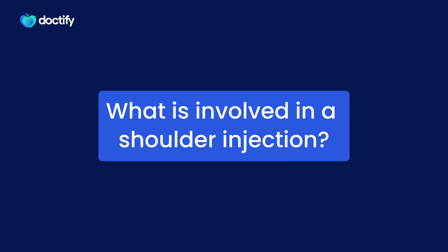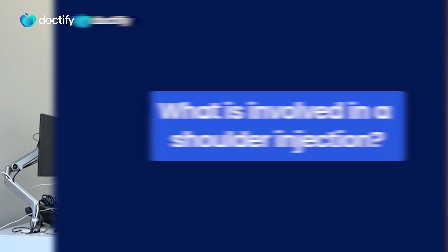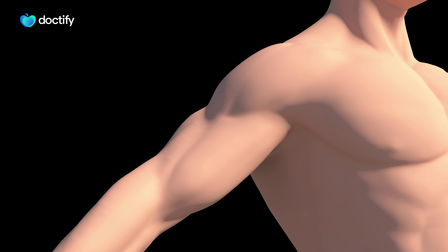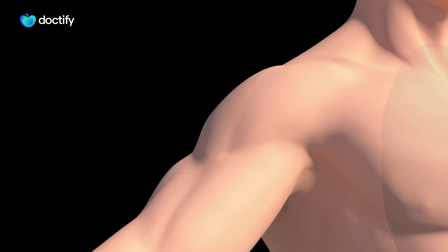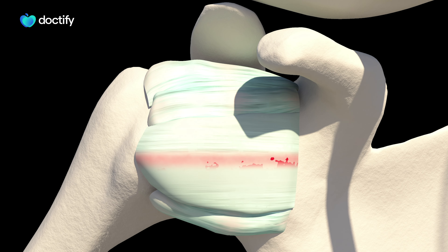What's involved in a shoulder injection? A shoulder injection is a simple procedure where we use an ultrasound machine to guide some anti-inflammatory medication right into the inflamed area. This is usually a painless procedure and can really help improve pain symptoms as well as expedite rehabilitation.